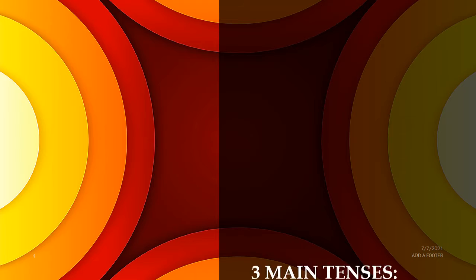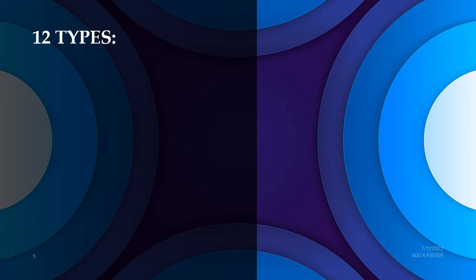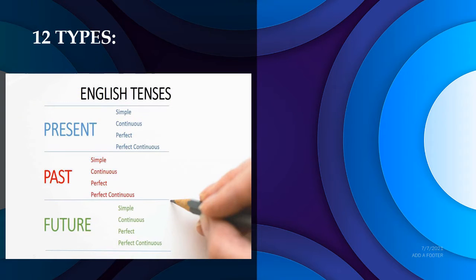In tenses we have three main tenses: past, present, and future — past tense, present tense, and future tense. These three main tenses are further divided and we get twelve types of tenses. The present tense is divided into four types: simple present, present continuous, present perfect tense, and present perfect continuous tense. Likewise, past tense is subdivided into simple past, past continuous tense, past perfect tense, and past perfect continuous tense.